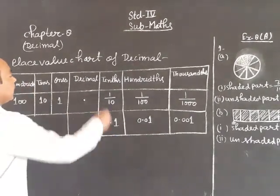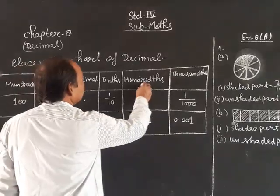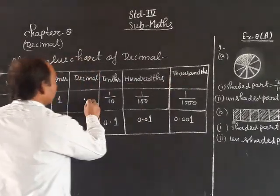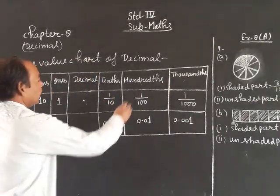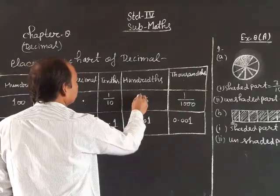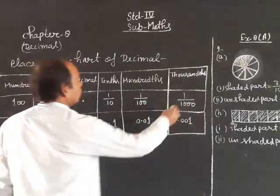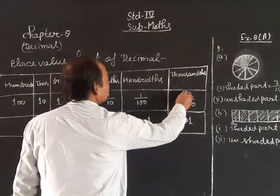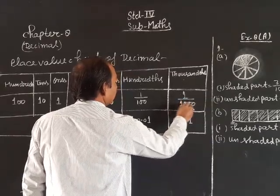After decimal: tenths, hundredths, thousandths. Tenths means one upon ten. Hundredths means one upon hundred. Thousandths means one upon thousand. Okay.